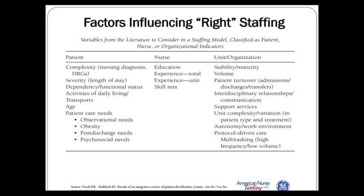If the case is made that we need to get the staffing right to keep patients safe and deliver care reliably, what are the factors that go into assessing the right staffing? A patient is not a patient is not a patient, and a nurse is not a nurse is not a nurse. The unit structure varies substantially and may influence staffing as well, so if you're looking at the factors that influence right staffing, there are a whole series of patient characteristics.